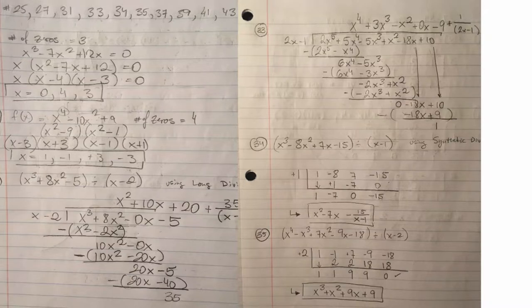This is number 25. We have this equation, x cubed minus 7x squared plus 12x equals 0. It has three zeros because it's a power to the 3 equation. First factor out an x, then you're left with this trinomial, then you just factor it because negative 4, negative 3. So those are your roots: 0, 4, 3.